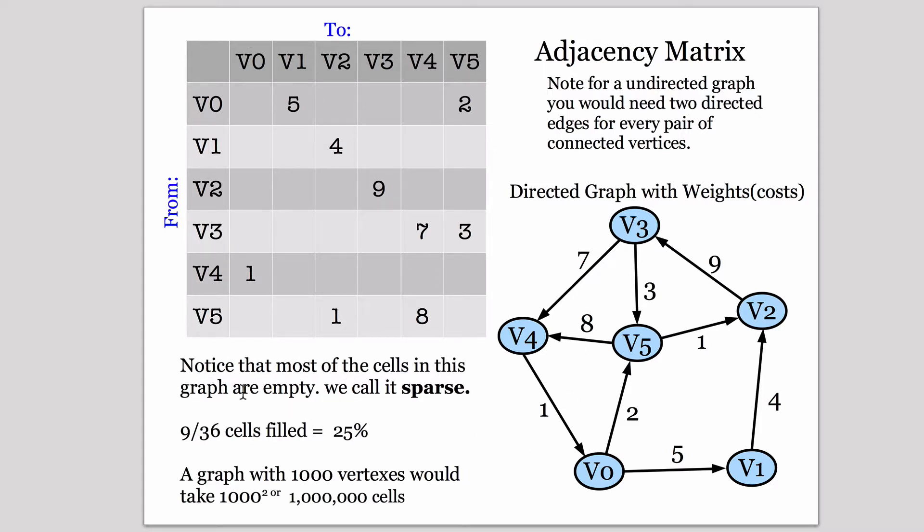Notice that most of the cells in this graph are empty. We call this sparse. So this is a data structure that has a lot of room in it that's not being used. You can actually measure sparseness by counting how many cells are used divided by the total cells. And this is 25% used. A graph of 1,000 vertices would require 1,000,000 cells. Because you have to just take the square of the vertices. So the memory requirements of a matrix are the number of vertices squared. So for a large number of vertices, that can be very expensive and easily consume all your memory. Plus if it's sparse, it's going to waste most of that memory.